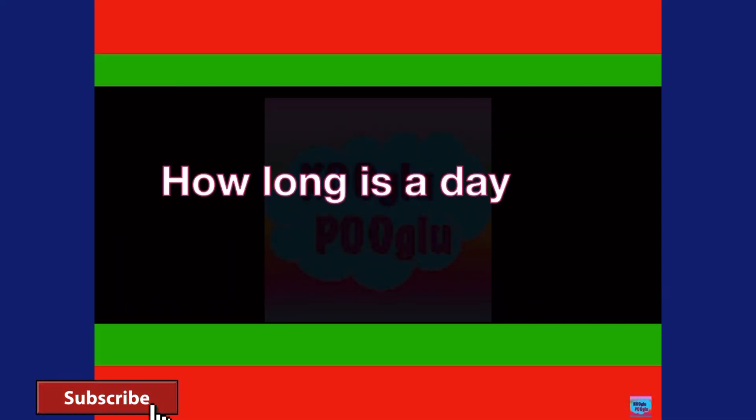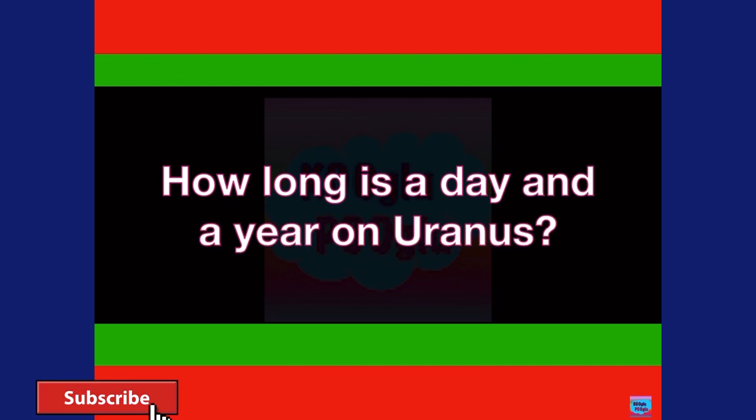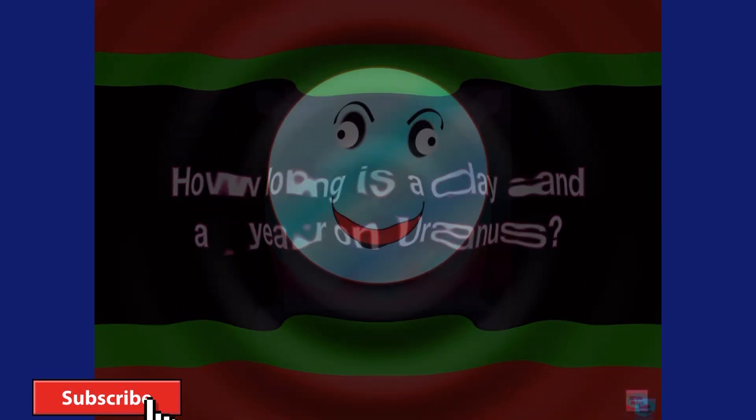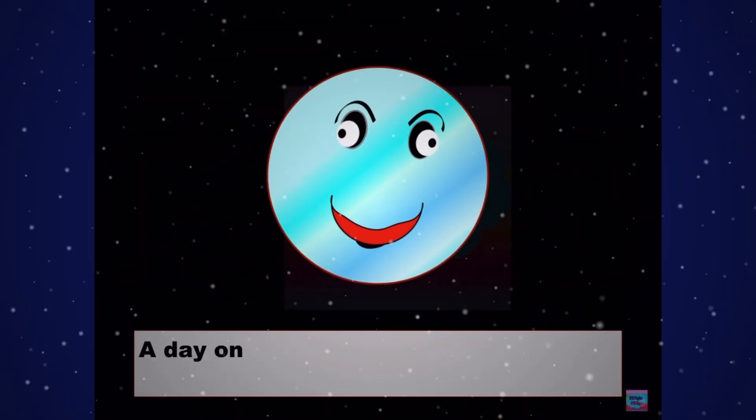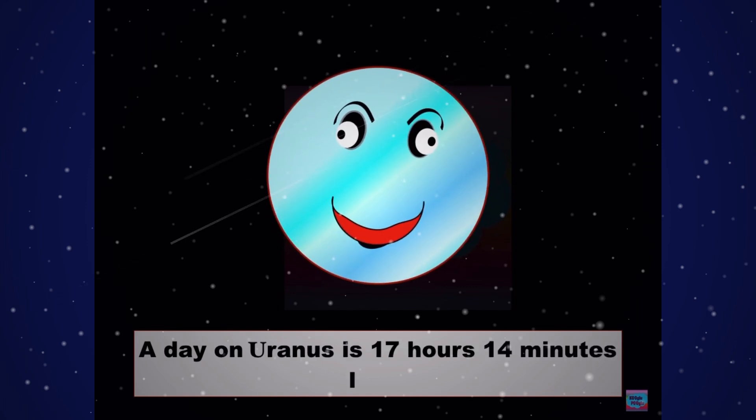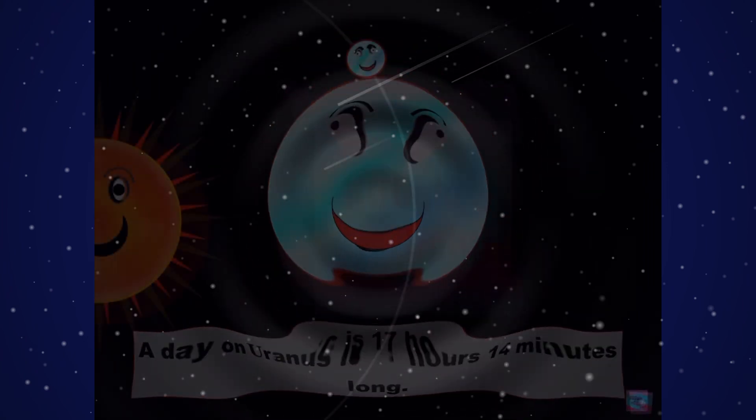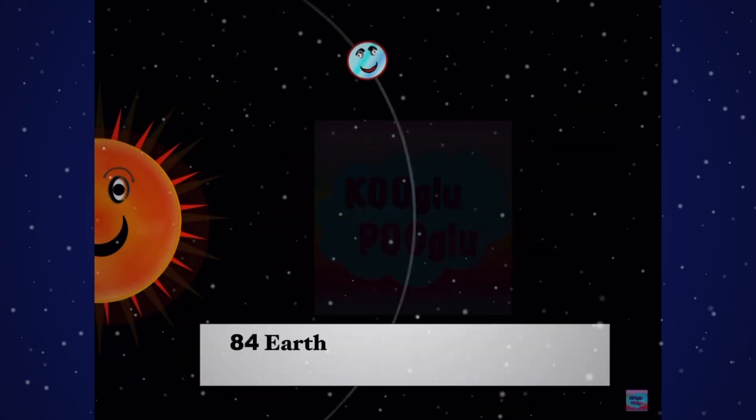How long is a day and a year on Uranus? A day on Uranus is 17 hours and 14 minutes long. 84 Earth years make one year on Uranus.